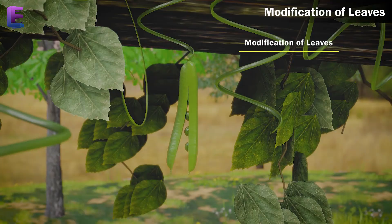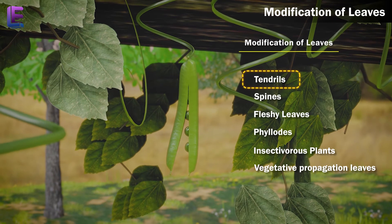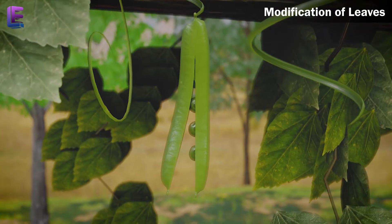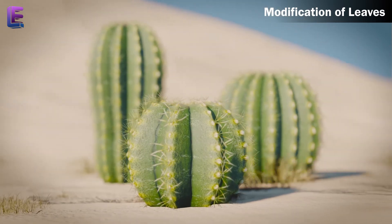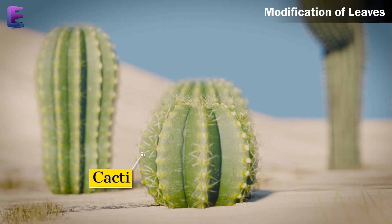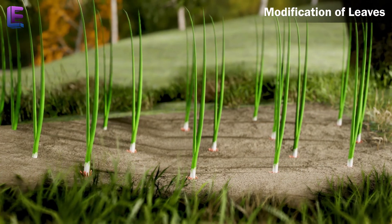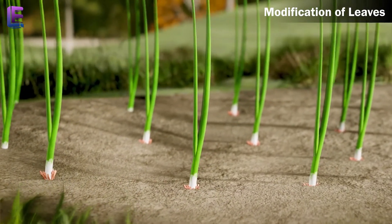Modification of leaves. 1. Tendrils: In trees with weak stems, leaves are modified into tendrils. Example, pea plant. 2. Spines: In desert plants, they are converted to spines to reduce transpiration. For example, cacti. 3. Fleshy leaves: They become fleshy to store food. Example, onion.